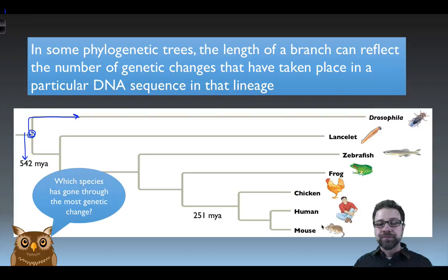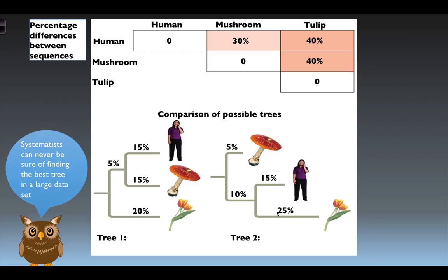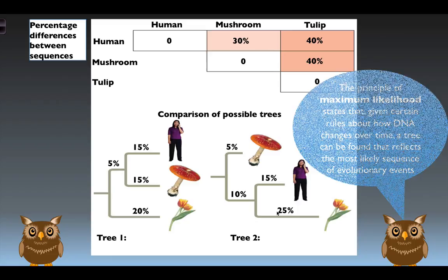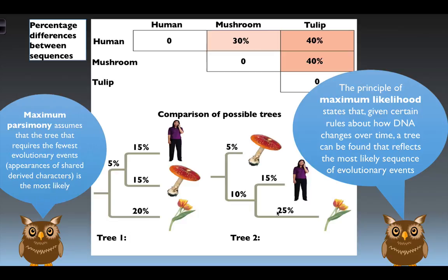Remember that a phylogenetic tree is a hypothesis. The problem is when you have more than one possible tree that could be your outcome. For example, we may have two trees representing two possible scenarios for how mushrooms, humans, and flowers came about. Systematists can never be sure of finding the best tree in a large data set. They must apply the principles of maximum parsimony and maximum likelihood. Maximum likelihood finds the tree most likely given rules about how DNA changes over time; maximum parsimony assumes the tree requiring the fewest evolutionary events is most likely.